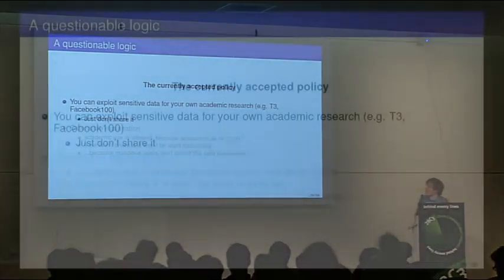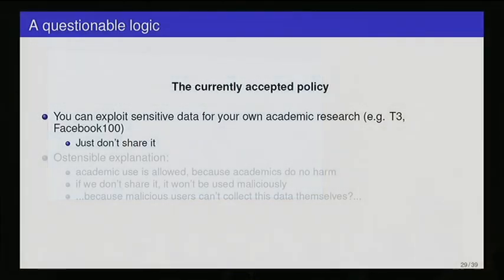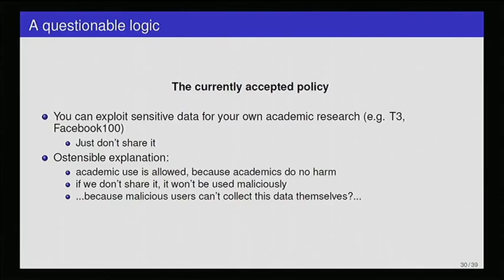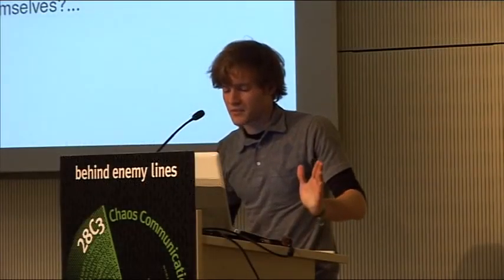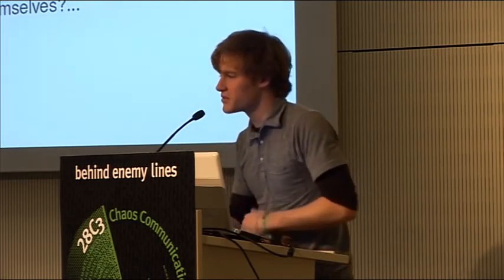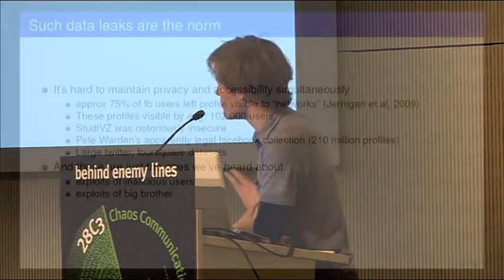Now another look at the current policy. You can exploit sensitive data for your own academic research. For example, this Tastes, Ties, and Time data set is still being used by the Harvard researchers who gathered it. You just can't share it. The ostensible explanation for this is that academic use is allowed because academics aren't interested in harming you. We aren't going to steal your identity. We don't even care about your identity. So the reason we don't share it is so it won't be used maliciously by people who do want to do those things. And the assumption here that holds us all together is that malicious users can't collect this data themselves. So as long as we don't distribute it, your privacy will be maintained.